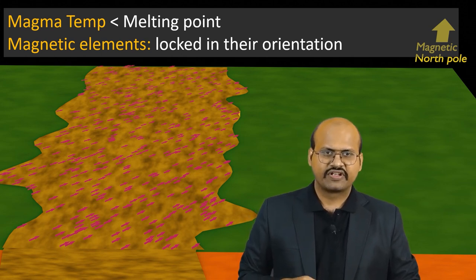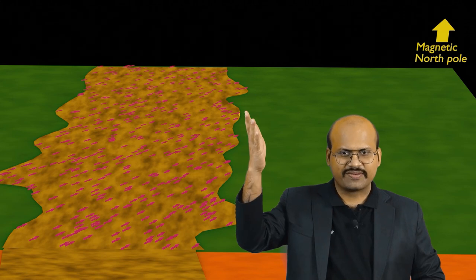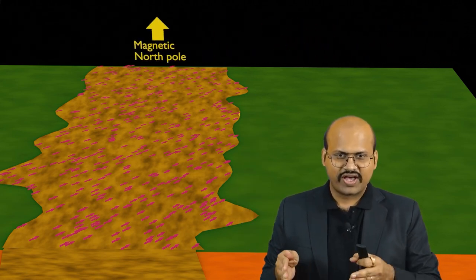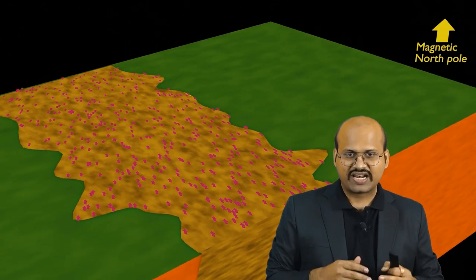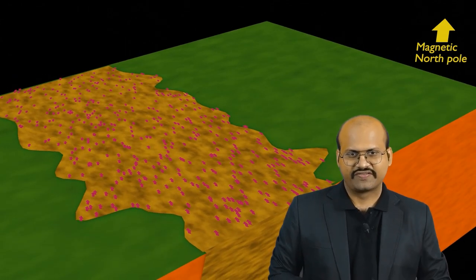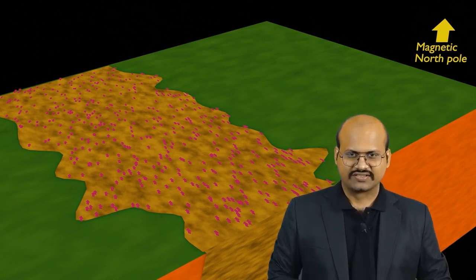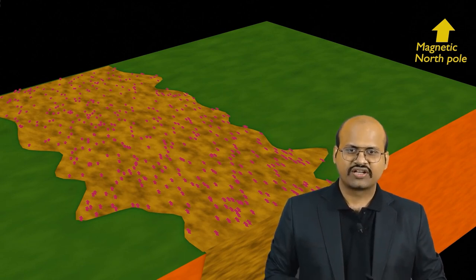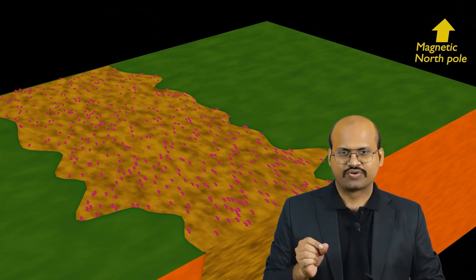These elements in the rocks can be used to locate the position of the magnetic north pole when the rock was formed. When a study was done on rocks from the same continent, one sample of rock taken from the current time pointed towards the current magnetic pole.